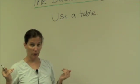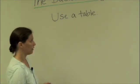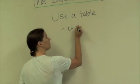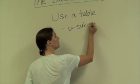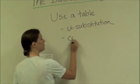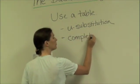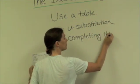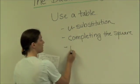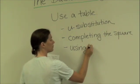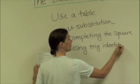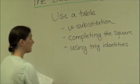And the main methods that we use for doing that are using U-substitution, completing the square, using trig identities, and eliminating square roots.